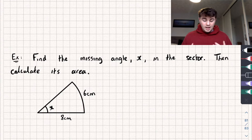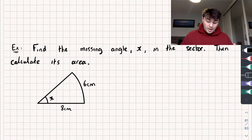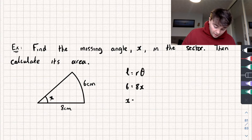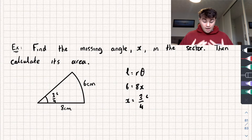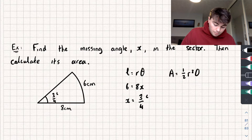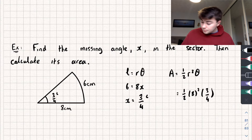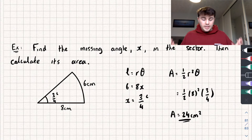The second question says: find the missing angle x and then calculate the area of the sector, given a radius of 8 centimetres, an arc length of 6 centimetres, and angle x radians. Using L equals r theta: 6 equals 8x, so x equals three quarters radians. Then using area equals one half r squared theta: one half times 8 squared times three quarters gives an area of 24 centimetres squared.